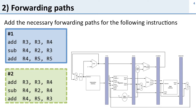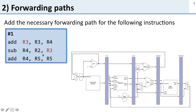Question two: add the necessary forwarding paths for the following instructions. For the first example, the dependency is on R3 — the add produces R3 which is needed by the subtraction in the next cycle. We forward from the cycle before to the execute stage. The results of the addition are in the memory stage while we're doing the subtraction in the execute stage, and we forward back to it.